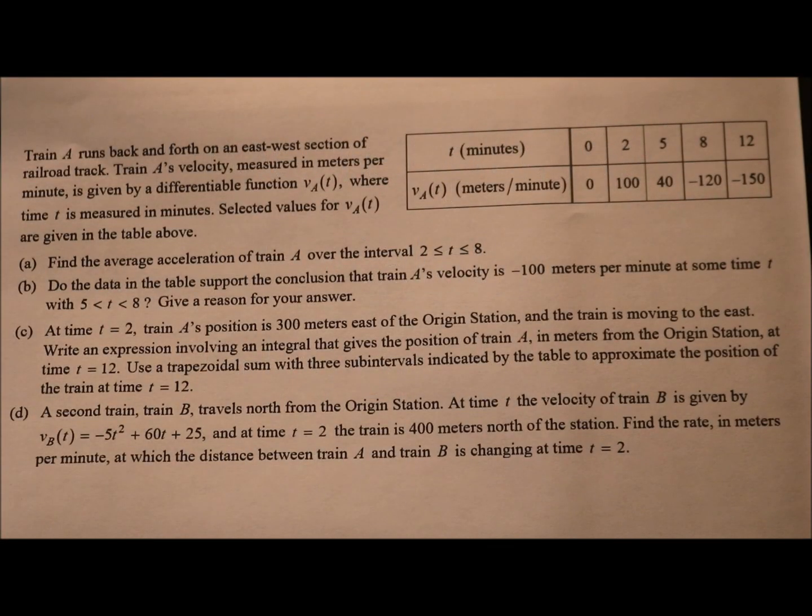Train A runs back and forth on an east-west section of railroad track. Train A's velocity, measured in meters per minute, is given by a differentiable function, v sub a of t, where time t is measured in minutes. Selected values of v sub a of t are given in the table above.